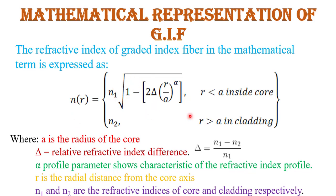Now the mathematical representation of graded index fiber. The refractive index profile formula is: n(r) = n1 × √(1 − 2Δ(r/a)^α) for r inside the core. This represents the refractive index of the core, which is continuously varying and non-uniform, depending on factors Δ, r, a, and α. N2 is the refractive index of cladding, which is constant.